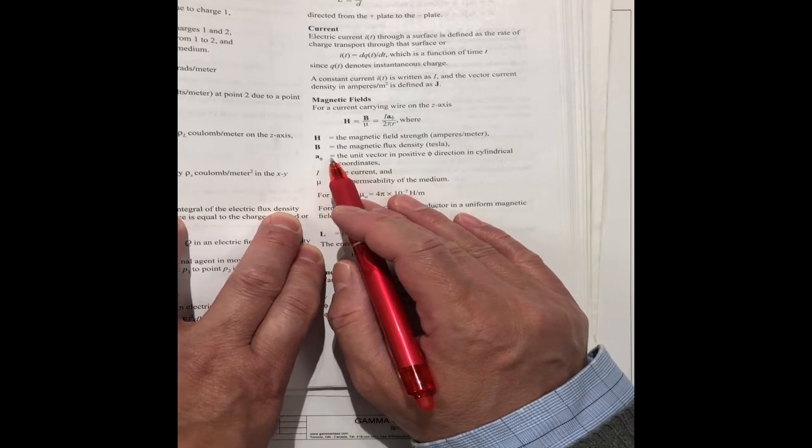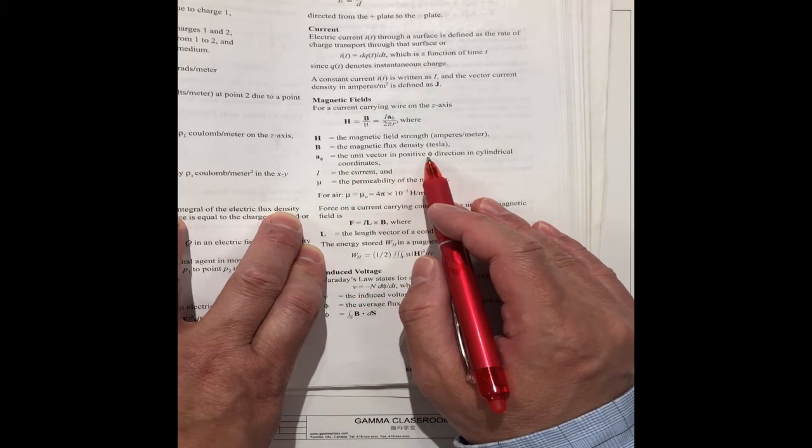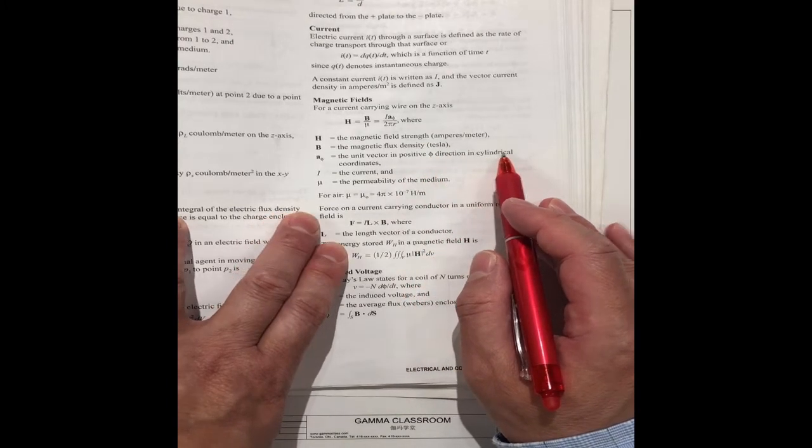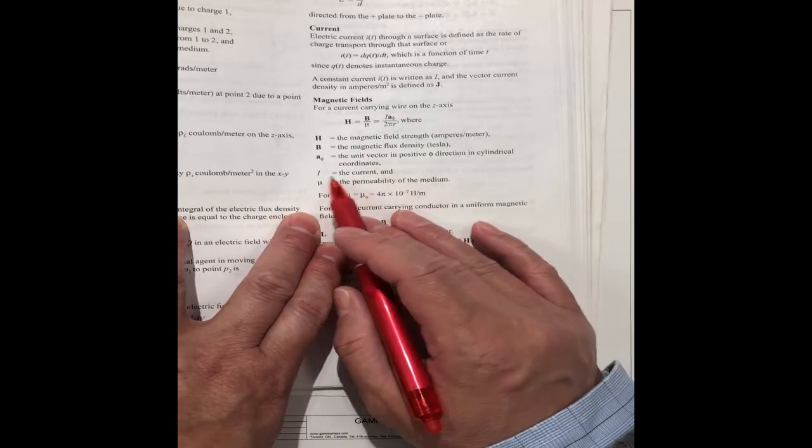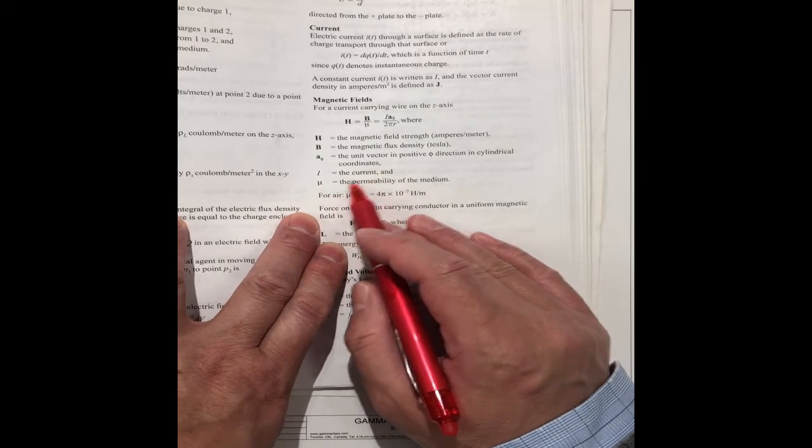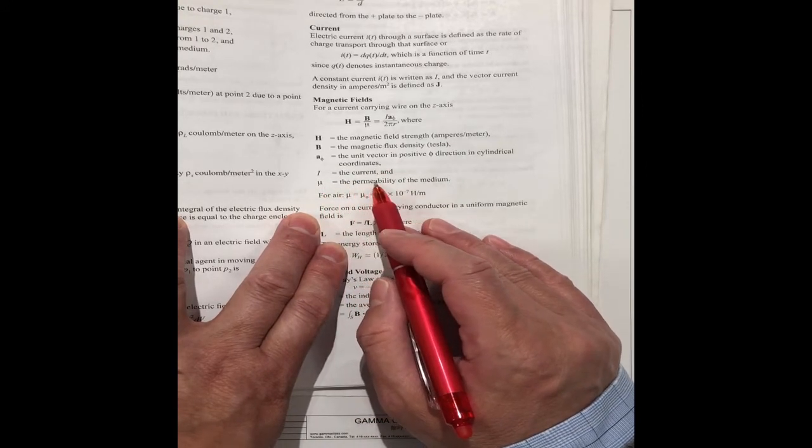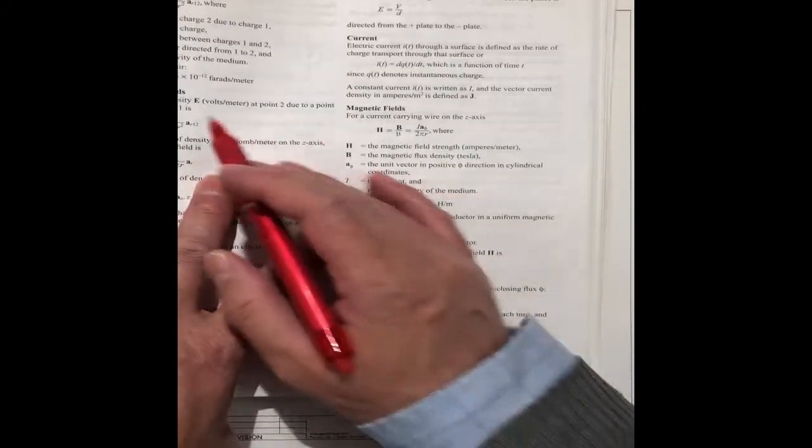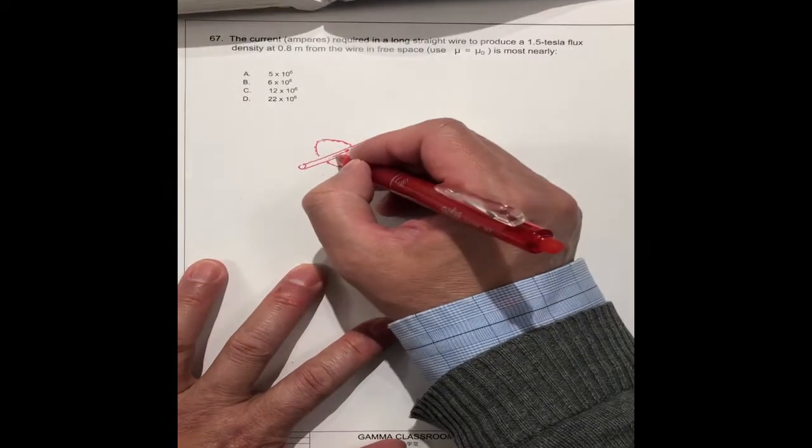If phi_n is equal to unit vector in positive phi direction in cylindrical coordinates, I is the current, mu is the permeability of the medium, and R is the distance.